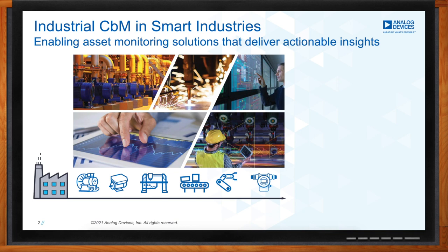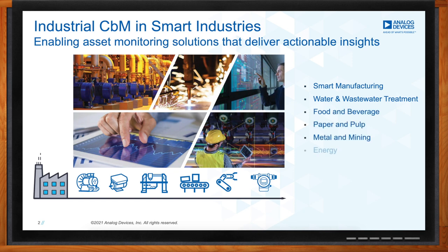From an end market perspective, the types of applications where we see condition monitoring are smart manufacturing, water and wastewater treatment, food and beverage, paper and pulp, metal and mining, energy, oil and gas installations, and smart logistics. As we deploy condition monitoring in those end markets — moving from left to right on the slide — traditionally it was rotating equipment: pumps, drives, and compressors. But now we're seeing condition monitoring in machine tools, conveyor belts, robotics, and instruments as examples of the newer applications.